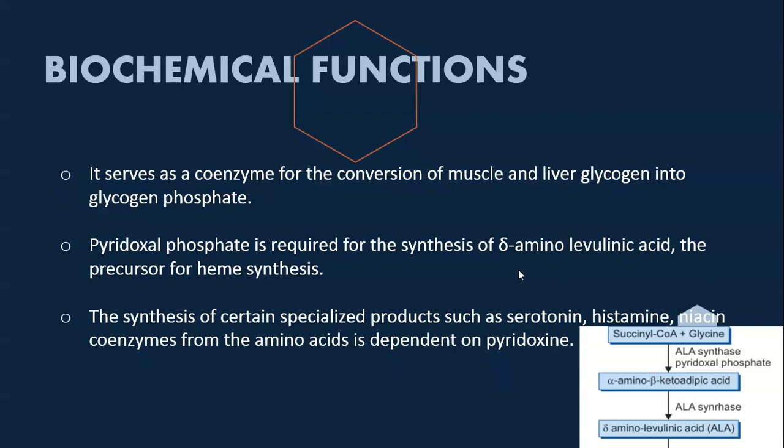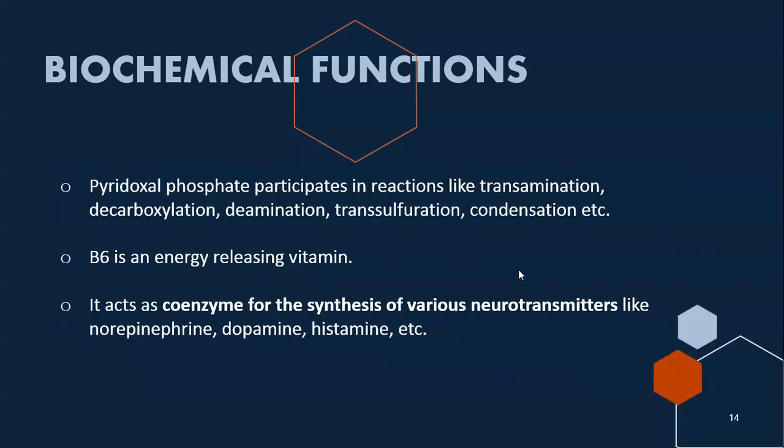The synthesis of certain specialized products such as serotonin, histamine, and niacin coenzyme from amino acids is dependent on pyridoxal phosphate (PLP). PLP also participates in reactions like transamination, decarboxylation, deamination, and condensation. Vitamin B6 is an energy-releasing vitamin and acts as a coenzyme for the synthesis of various neurotransmitters like norepinephrine, dopamine, and histamine.